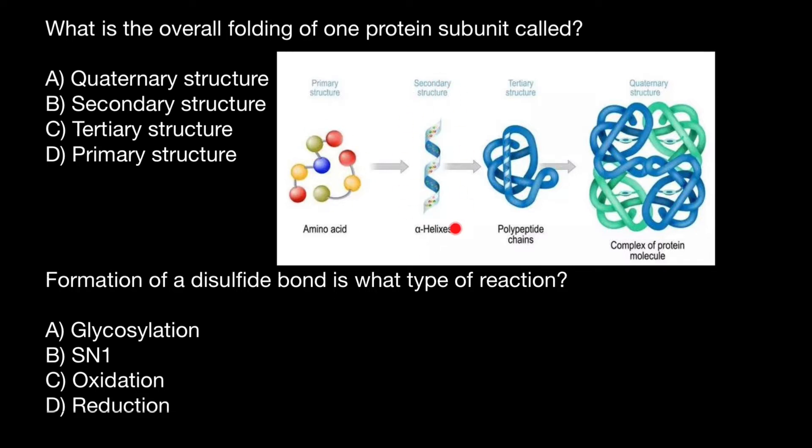Secondary structure is the next level of protein folding, where we can see alpha helices and beta-pleated sheets.